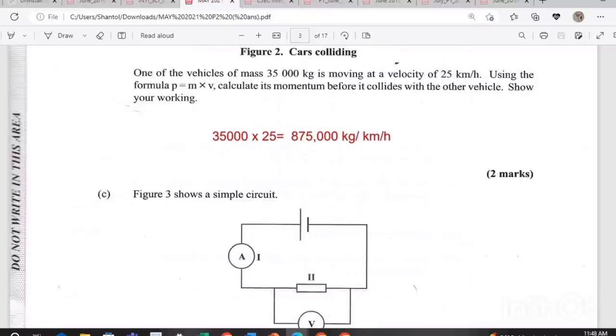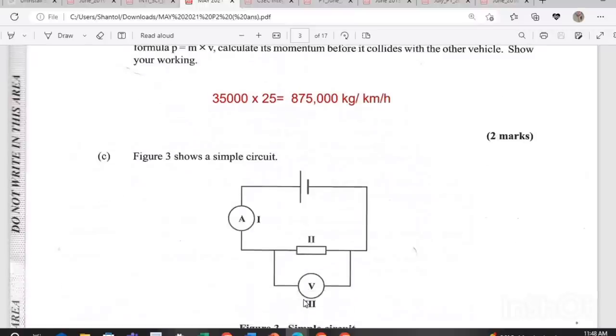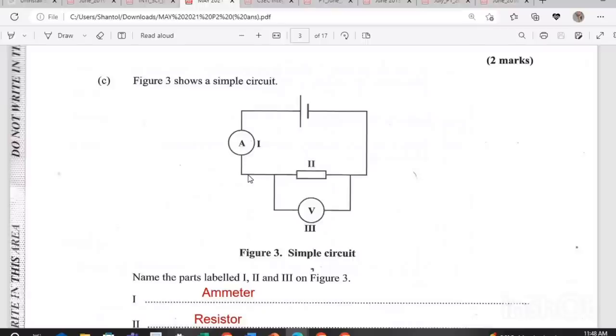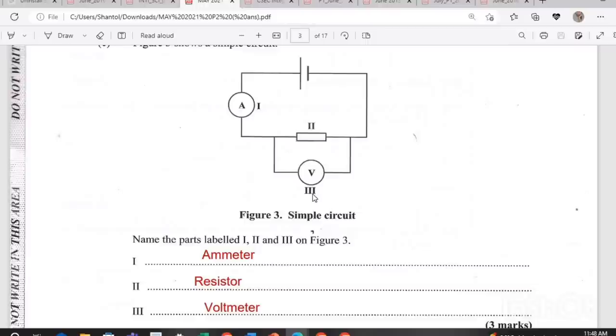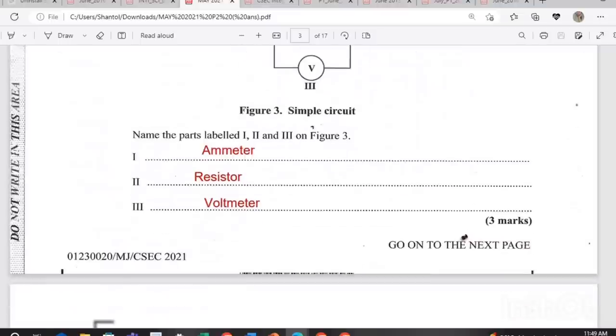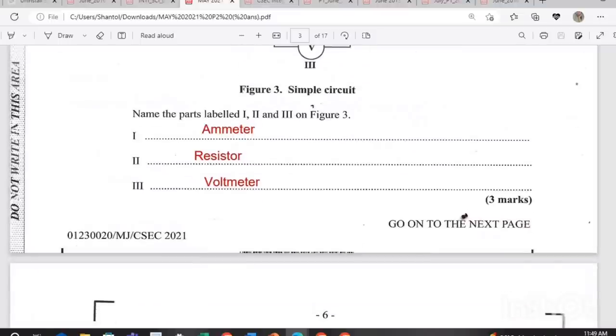Figure three shows a simple circuit. The question asks us to identify what A is, what III is and what V is. A would be an ammeter, III would be a resistor and V would be a voltmeter. Wherever you see A, remember A is representing current so it is an ammeter. V voltmeter for voltage. And this rectangular structure here which has no other marks is a resistor. Make sure you know your circuit diagram and all its parts. That's for three marks.